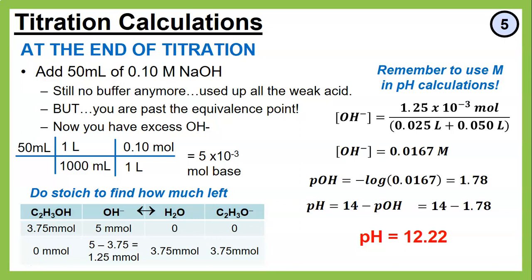This can feel overwhelming because there are many variations: maybe it's not a 1:1 stoichiometric ratio, maybe you're given grams instead of moles and need to convert, maybe there's scientific notation involved, or maybe you have a base in the beaker and are adding acid — same concept but flipped.